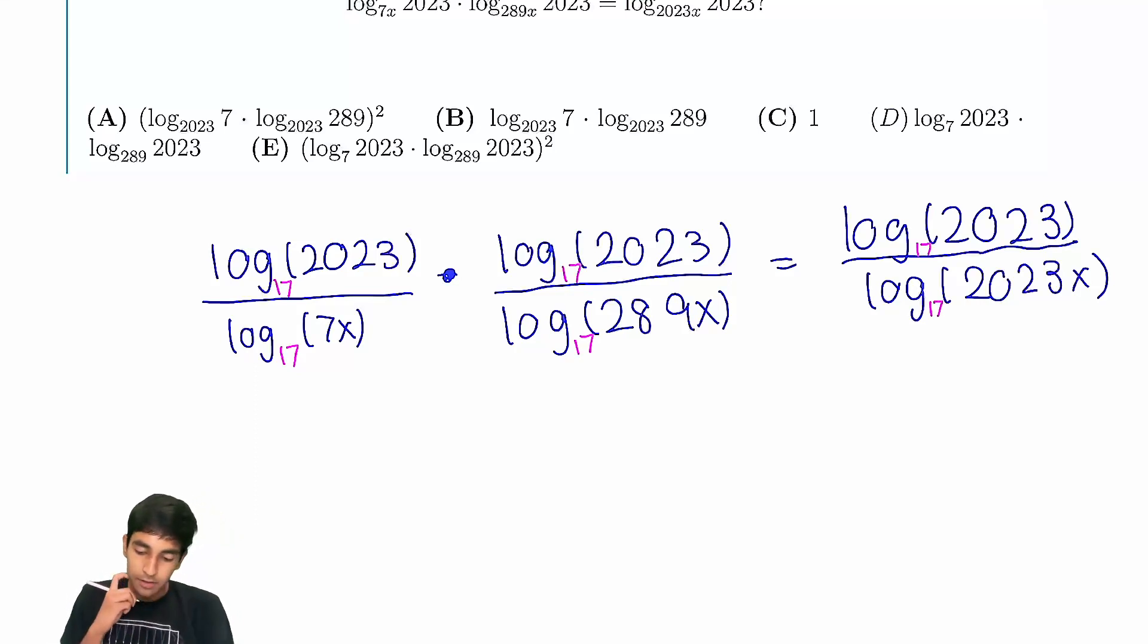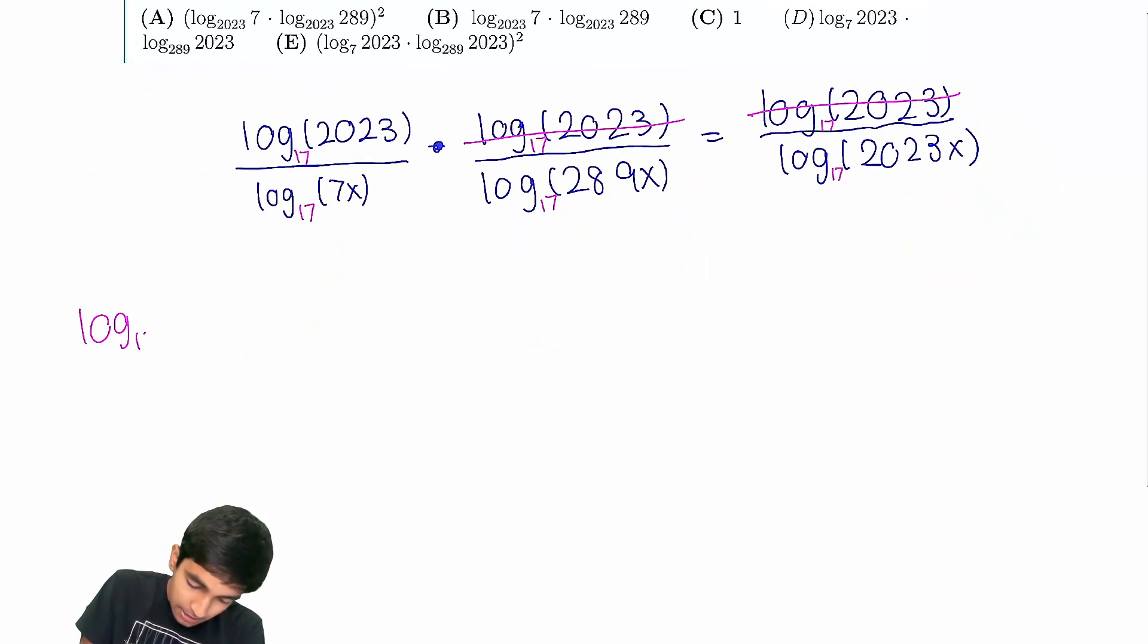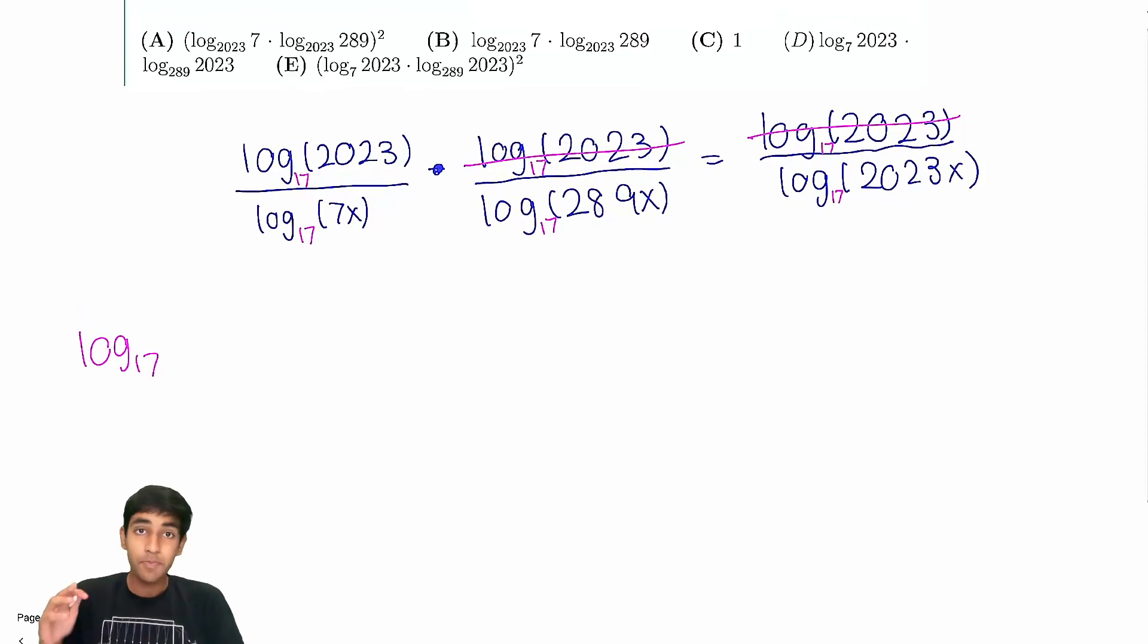So what happens when you take 17? First of all, you can immediately see you can cancel one of those terms. And next, we have log₁₇(2023). But remember, 2023, you should know the prime factorization of this. 2023 is 7 times 17 squared. So we can just break this up like this.